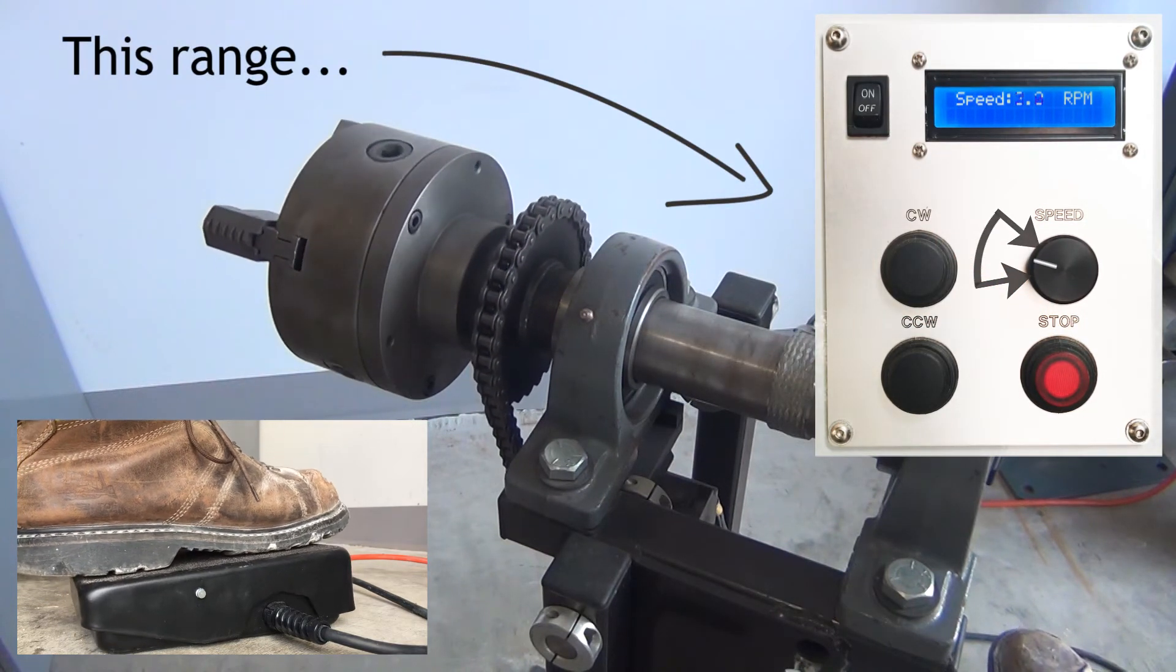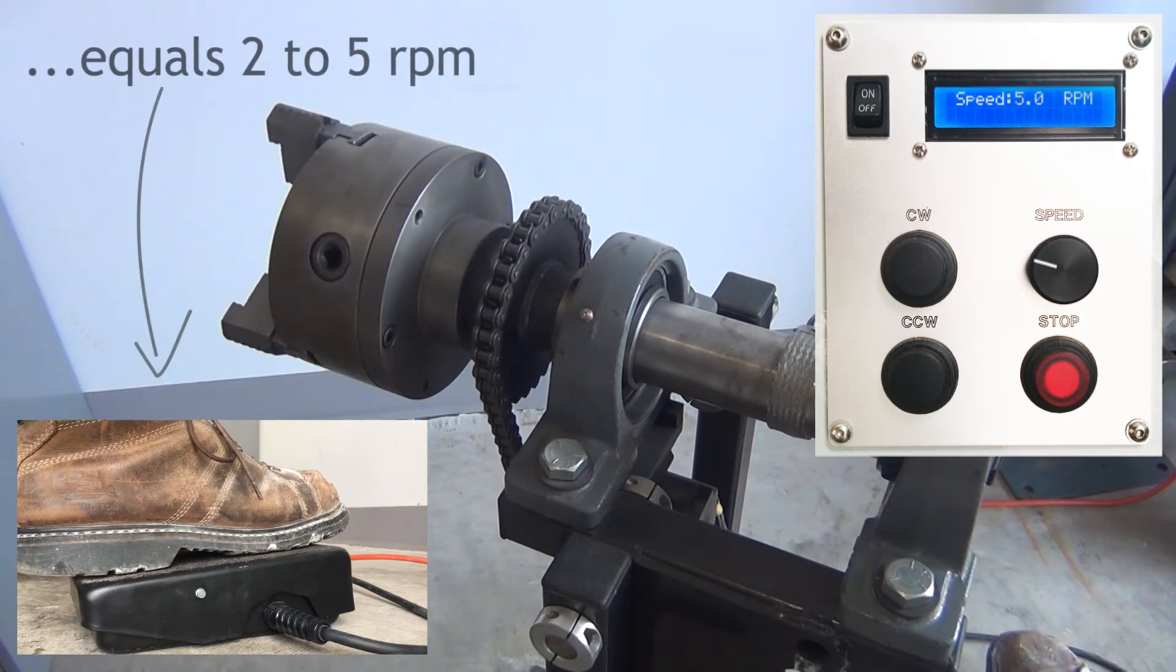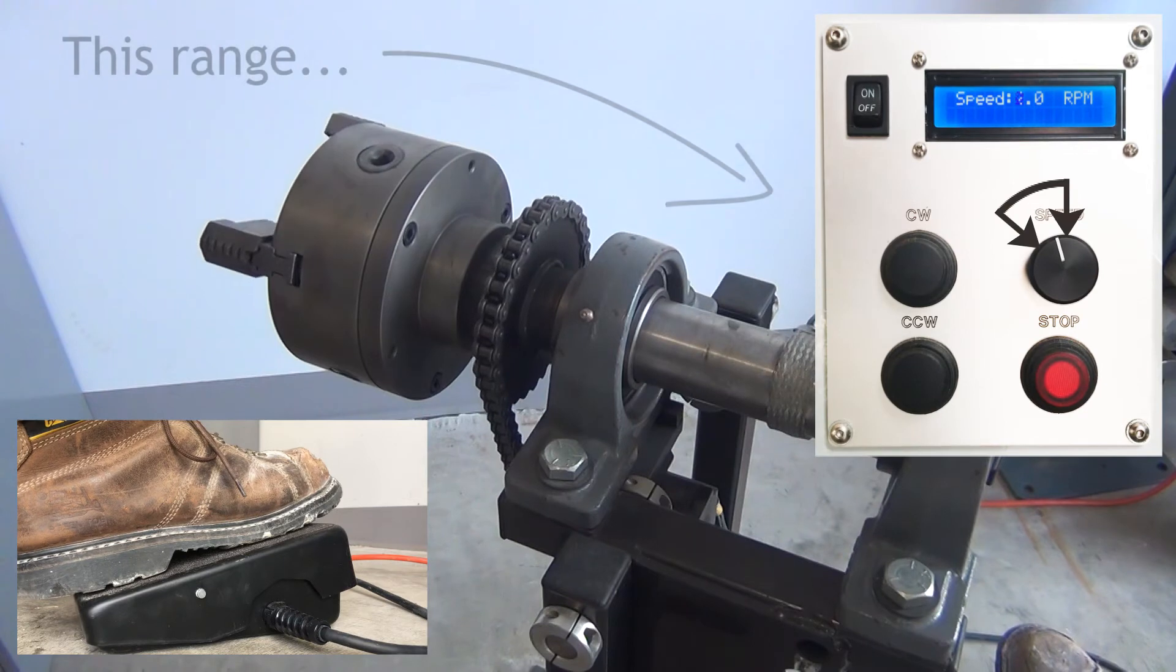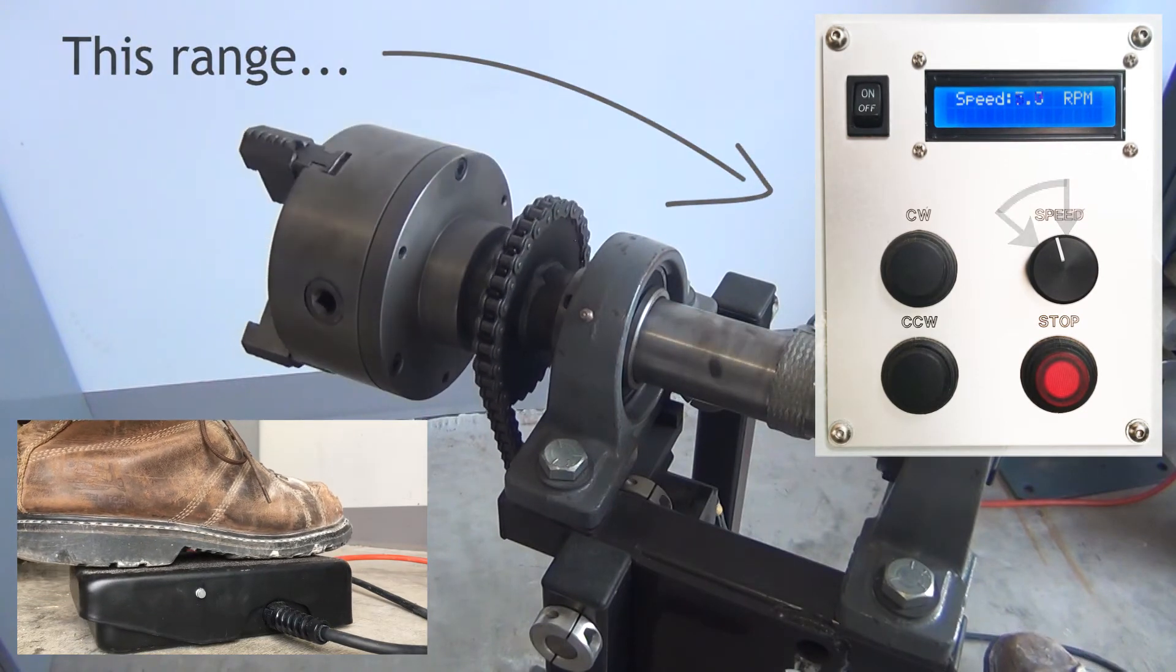Even though there aren't any discrete positions like you'd get with a selector switch, you can see that the range is fairly broad, so once you start to rotate the potentiometer, you'll turn here and see the speed change.